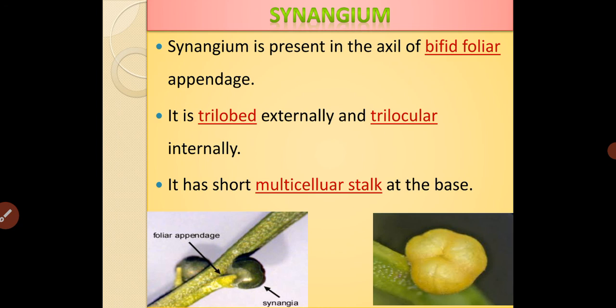Synangium is present in the axis of the bifid foliar appendages. It is trilobed externally and trilocular internally. It has a short multicellular stalk at the base.